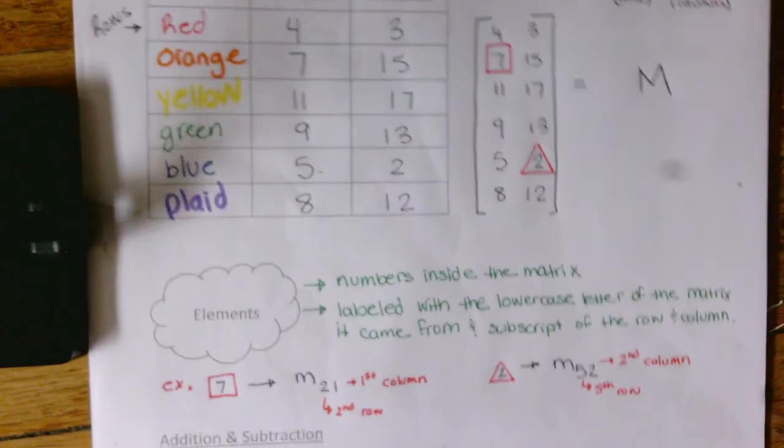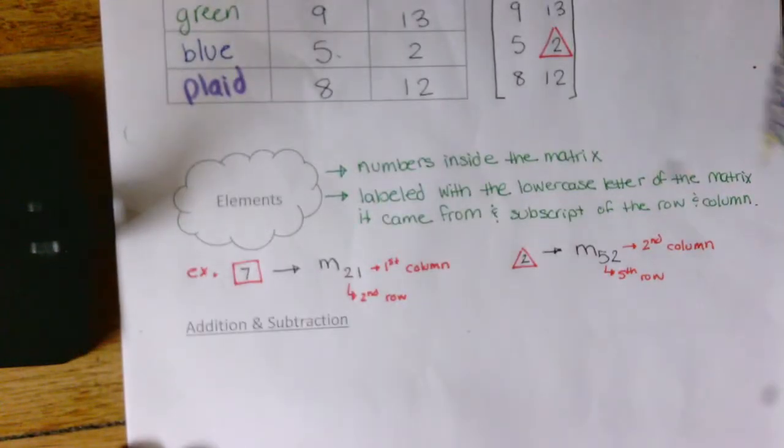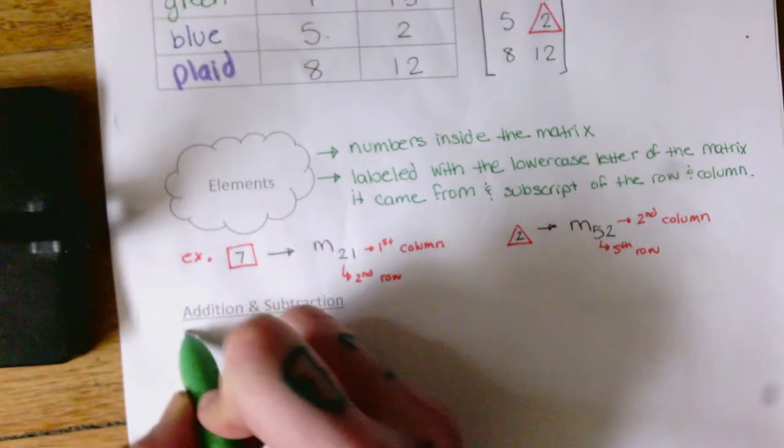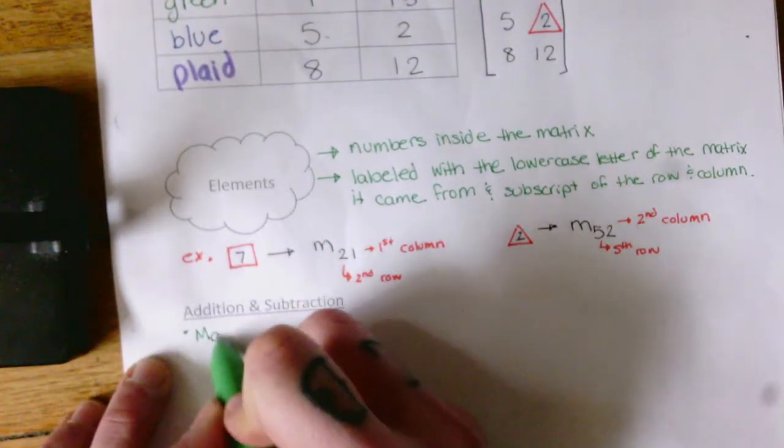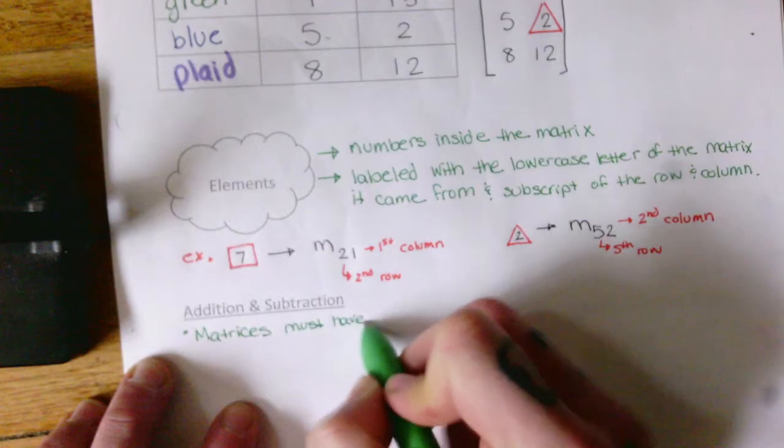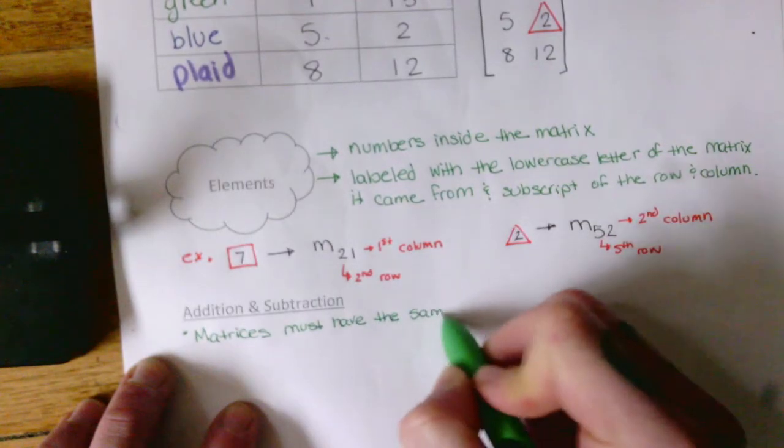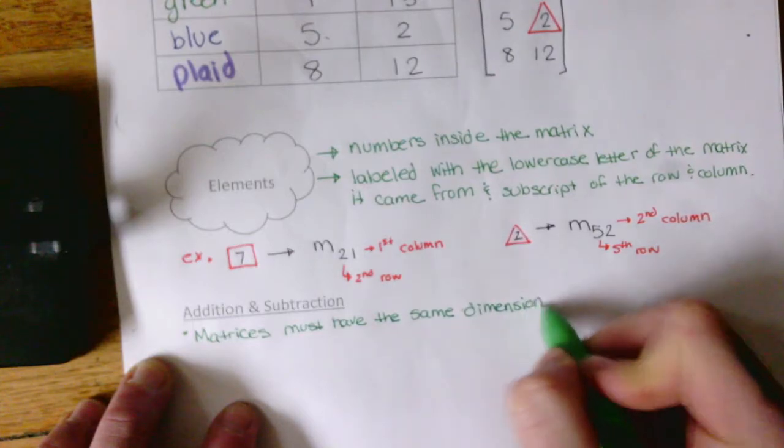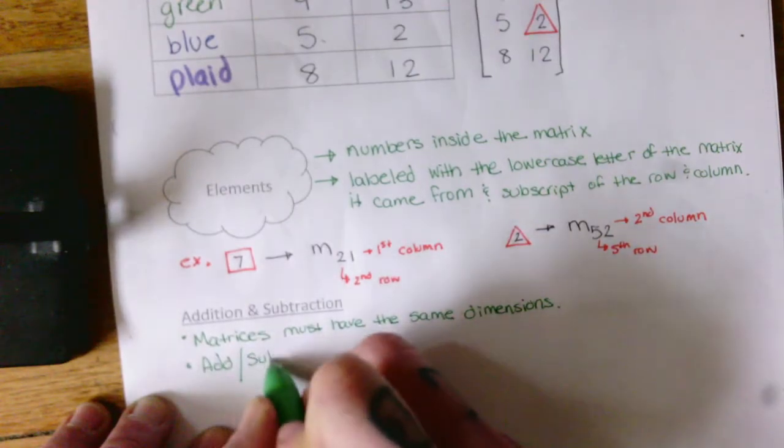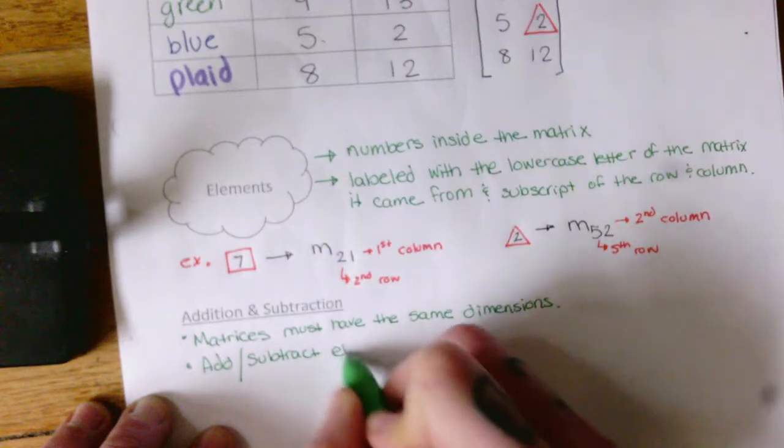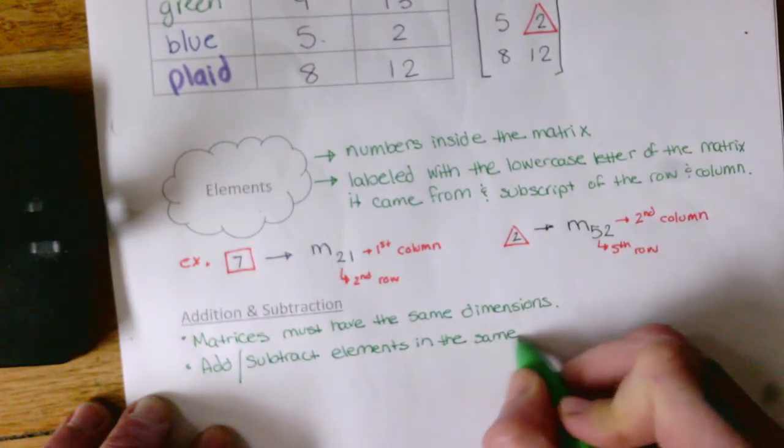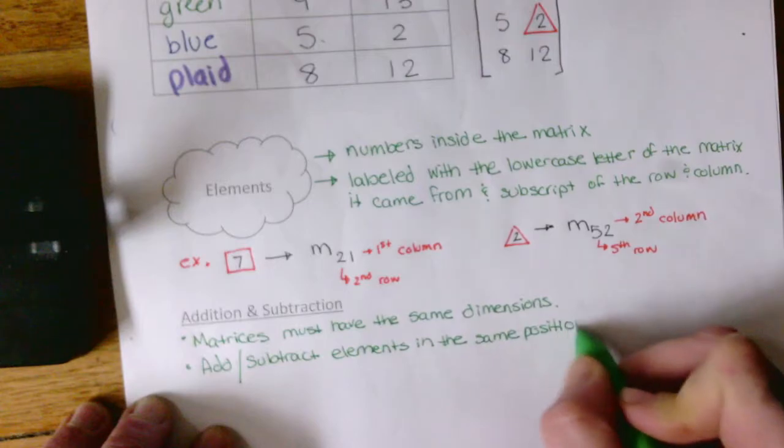Okay, so bit of a review for us because we've been doing these all along. So for addition and subtraction there are some rules. Okay, so matrices must have the same dimensions. And we add or subtract elements that are in the same position.